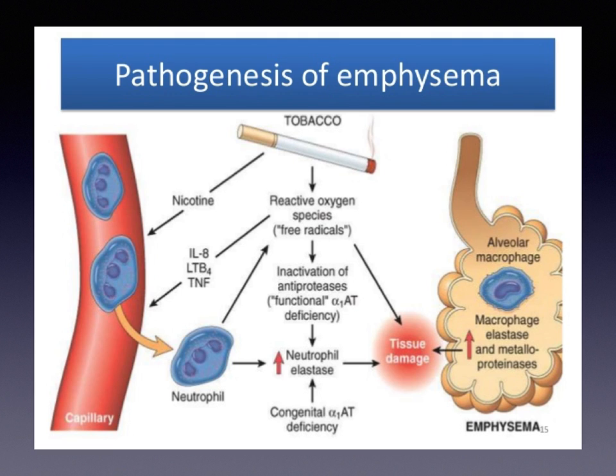Dyspnea is caused by expiratory flow limitation. Pathologically, COPD lungs have alveolar destruction and enlargement, and inflammation of the lung parenchyma and the airways. Emphysema can be caused from alveolar wall cell death or failure of alveolar wall maintenance. Studies show that chronic inflammation and oxidative stress contribute to more destruction and impaired lung maintenance and repair in emphysema.